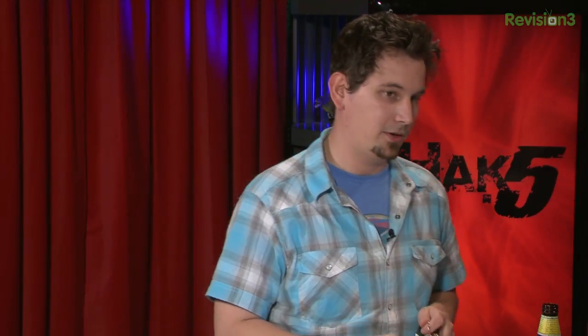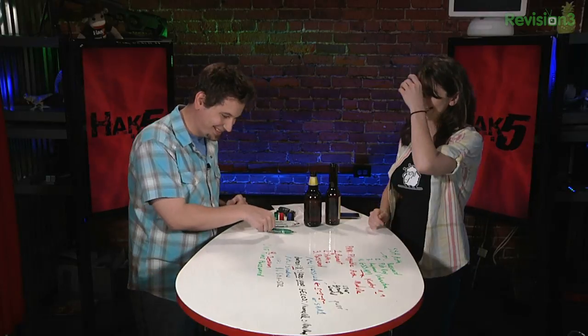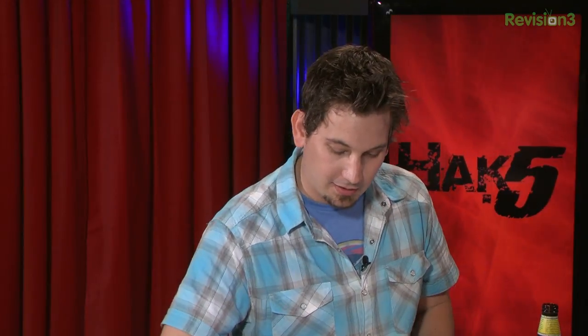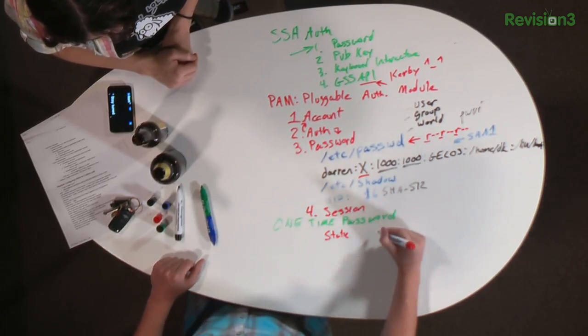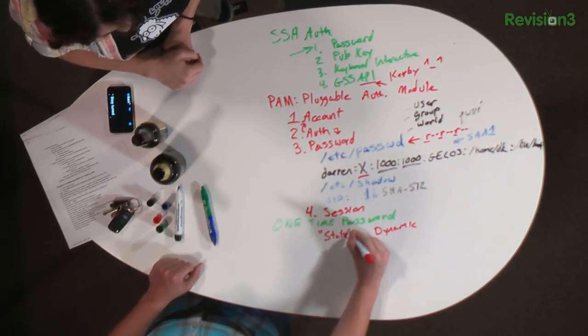We've had Stina on here. RSA tokens back in the day — if you have one of those, throw it away because that's been hacked. The Google Authenticator app is a great example of a time-based one-time password. Your regular password is static, while these are dynamic — meaning every time you use your token or application, it changes.